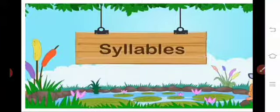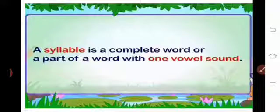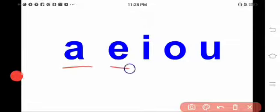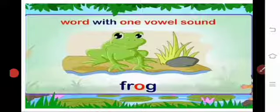Syllables — what is meant by syllable? Do you know vowels and consonants in alphabets? A syllable is a complete word or a part of a word with one vowel sound. What are the vowels? Yes — a, e, i, o, u — these are all the vowel sounds. The rest of the alphabets are consonants.